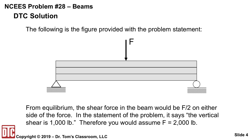From equilibrium and the shear force diagram, the shear force in the beam would be F over 2 on either side of the force. Equilibrium gives you F over 2 on the left, F over 2 on the right. When you draw the shear force diagram, F over 2 is the shear force. The problem statement says the vertical shear is 1,000, so you would assume that F is 2,000.